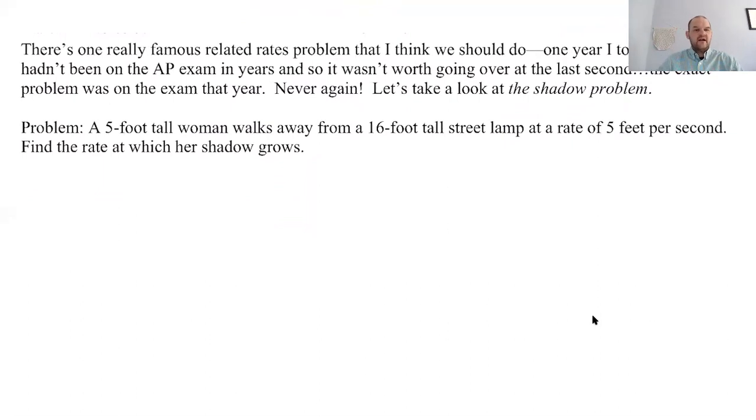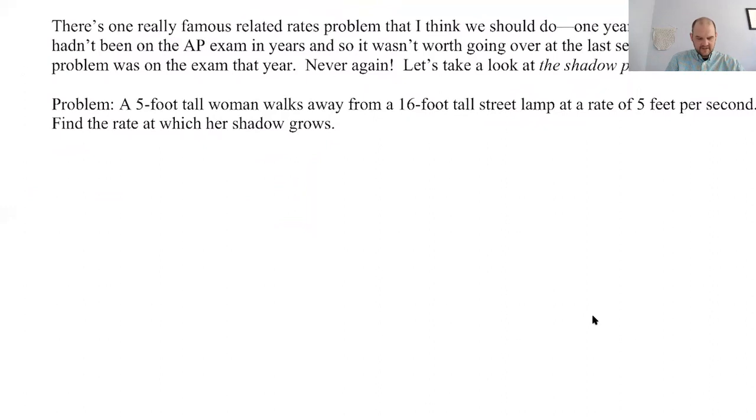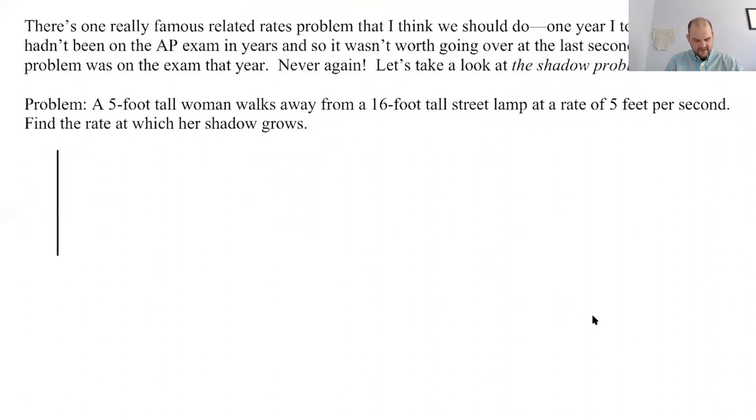So let's see. This is the problem that I have. A five foot tall woman walks away from a 16 foot tall street lamp at a rate of five feet per second. Is that reasonable? I don't know. I didn't really work that up. Find the rate at which her shadow grows. All right, let's draw a picture and see if we can figure out what's happening. So I'm actually going to draw, if you know me, I like to draw my triangles not this way, but I'm drawing it this way because I feel like walking away means walking to the right. So this is the setup of the problem and she's five feet tall. So this is five and the lamp is 16 feet tall. So this is 16.